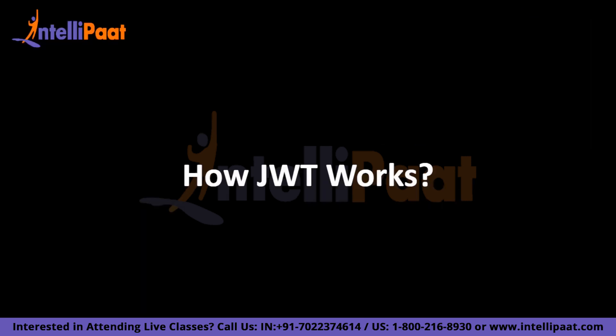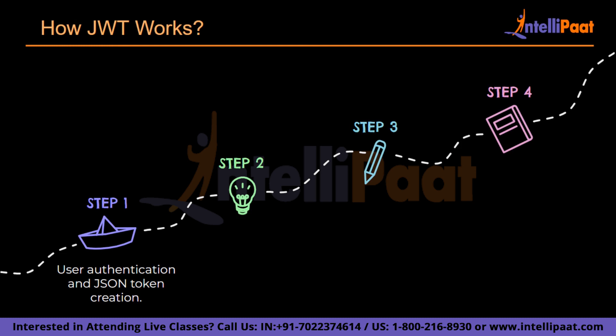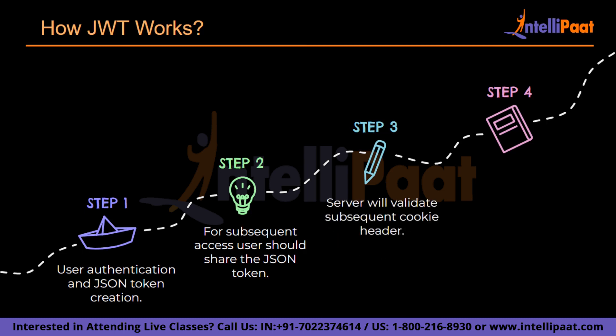When a user successfully signs in with their credentials, a JSON Web Token will be returned, which will act as a credential from then onwards. Extreme caution should be exercised to avoid security risks with these tokens. For subsequent access, the user agent shares the JWT token, done by the browser using the cookie header and bearer schema. The server's protected routes verify the authorization header for a valid JWT, and if one is found, the user is granted access to protected resources. Note that if you send JWT tokens through HTTP headers, some servers don't accept more than 8KB in headers, so you should prevent tokens from getting too big. If you need to embed too much information, you may need an alternative solution like Auth0 fine-grained authorization.